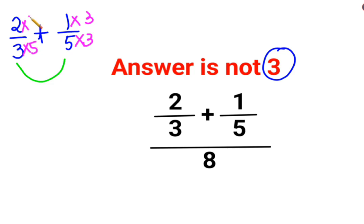Same goes with 2, it gets multiplied by 5. So now this becomes what? 10 upon 15 plus 3 upon 15. Now since the denominators are same, I can directly add the numerators which is 13 upon 15.